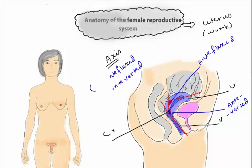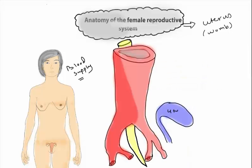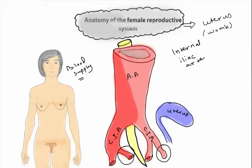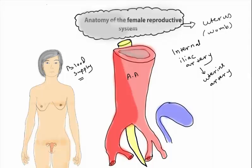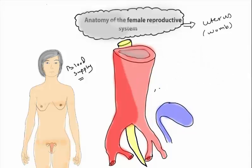For the blood supply of the uterus: this is the abdominal aorta, this is the common iliac artery, and the internal iliac artery. The uterine artery comes from the internal iliac artery. There are also direct branches from the abdominal aorta going to the ovaries — the ovarian arteries — which anastomose with the uterine arteries and also supply the uterus.